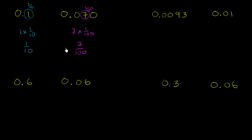Now we can compare these two numbers, and there are two ways you could think about it. You could try to turn 1 tenth into hundredths. If you want the denominator to be increased by a factor of 10, you need to do the same thing to the numerator. So all I did is multiply the numerator and denominator by 10. 10 hundredths is the exact same thing as 1 tenth. And here it becomes very clear: 10 hundredths is definitely larger than 7 hundredths.